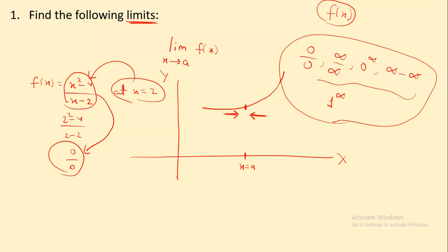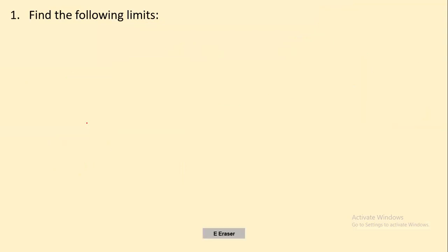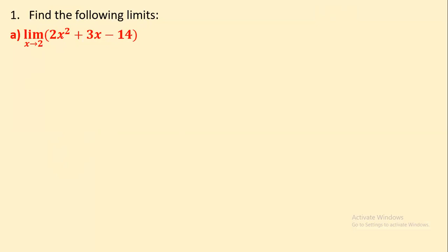The limit actually gives the function value at a certain point. When you have an indeterminate form, you cannot read the actual meaning directly. For example, the limit of x tends to 2 of (2x² + 3x - 14): put x = 2 to get 2(4) + 3(2) - 14 = 8 + 6 - 14 = 0. So the answer is zero — not indeterminate here, zero is the final value.